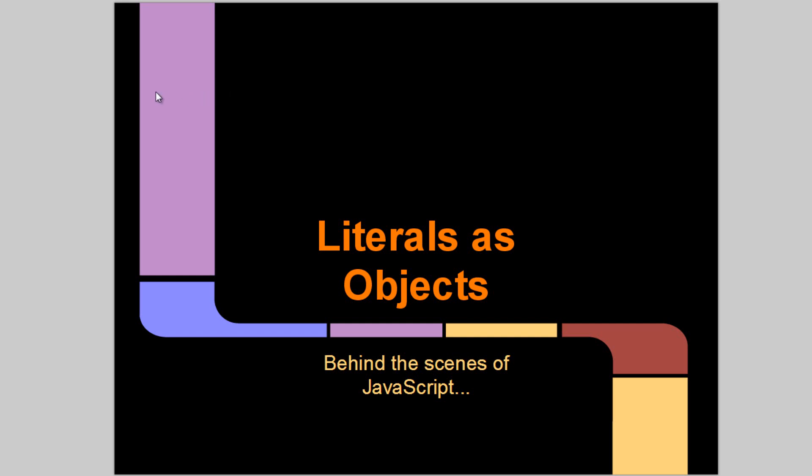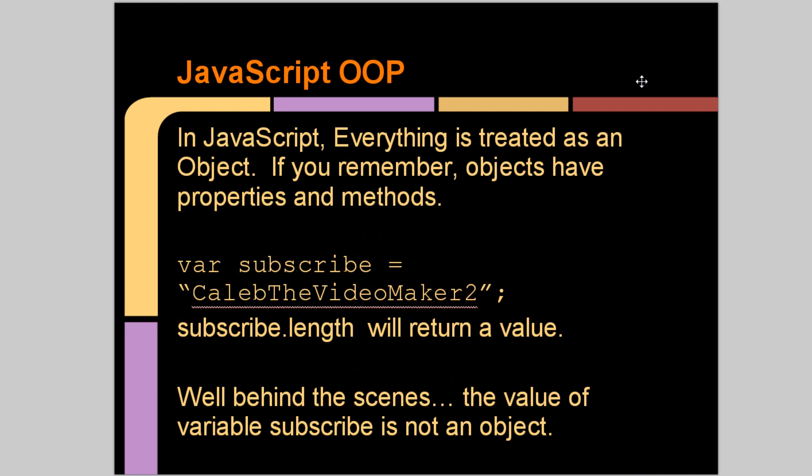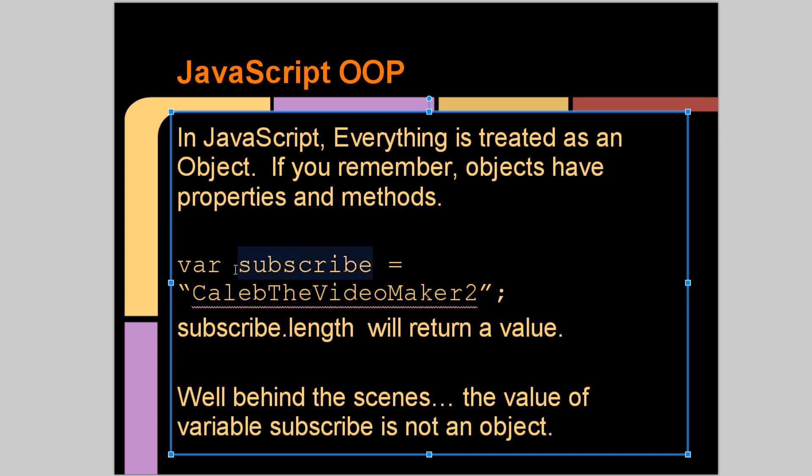In JavaScript, everything is treated as an object. So when we started, we had properties and methods. Here we declare a variable and initialize it with the value "Caleb the video maker" to the string, and yes this is a subliminal message to please subscribe to my YouTube channel. Subscribe.length will return a value. It'll tell you how many characters is in the string: 1, 2, 3, 4, 5, 6, 7, 8, 9, 10, 11, 12, 13, 14, 15, 16, 17, 18, 19. That is a really long name.